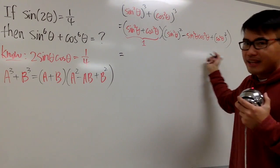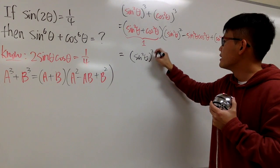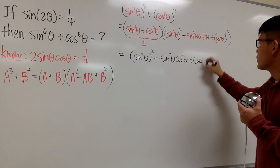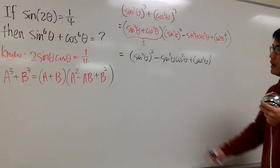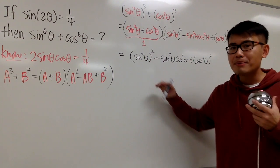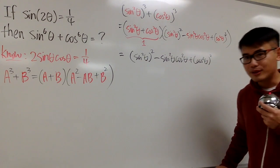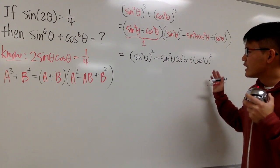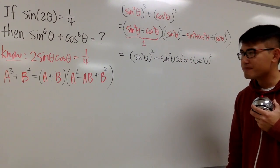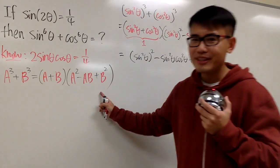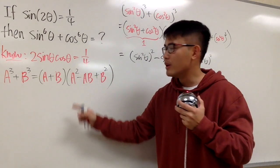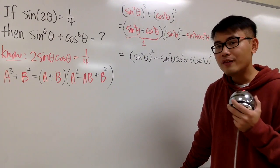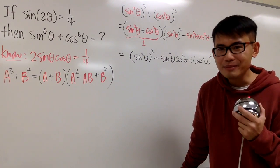So we're left with (sin²θ)² − sin²θcos²θ + (cos²θ)². I'll keep it in this form. This is really nice, but can we keep factoring? Well, the formula a² − ab + b² is not factorable, so this factoring stops here.